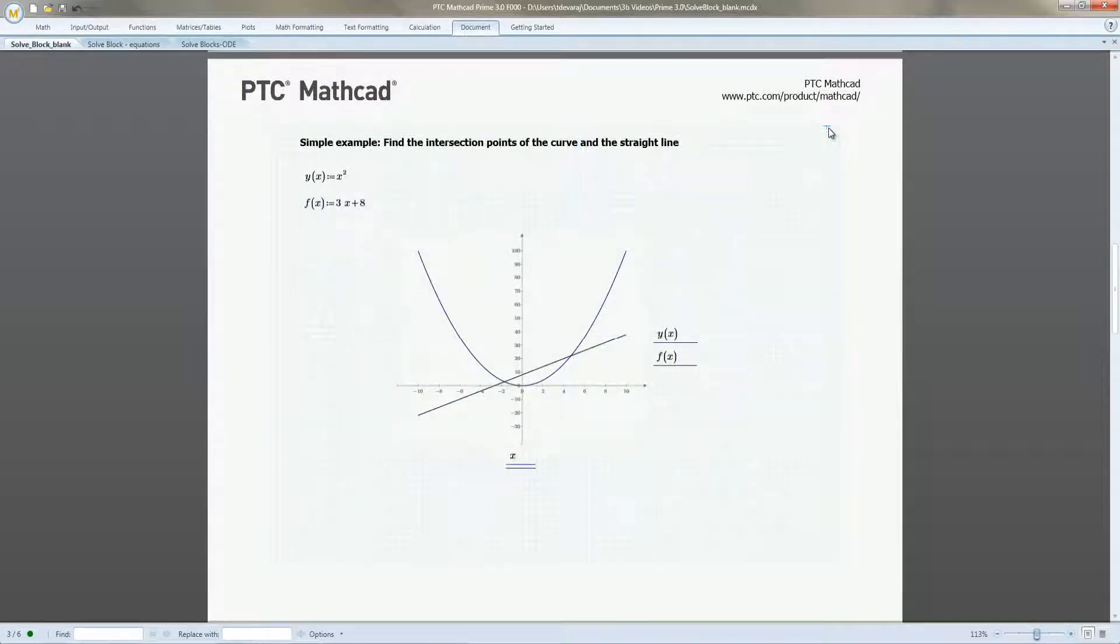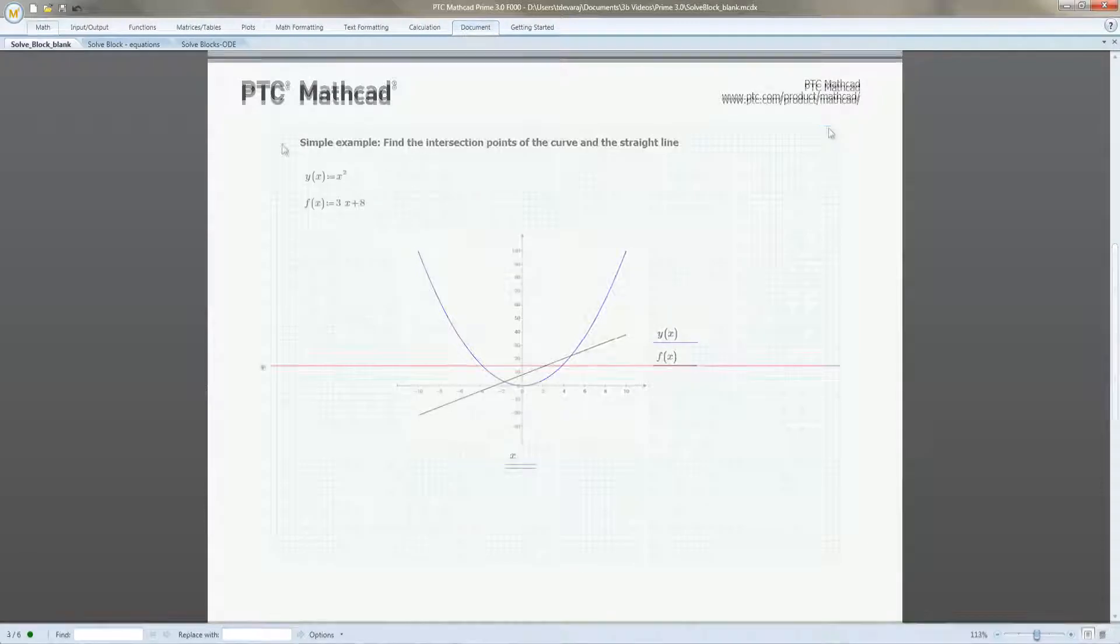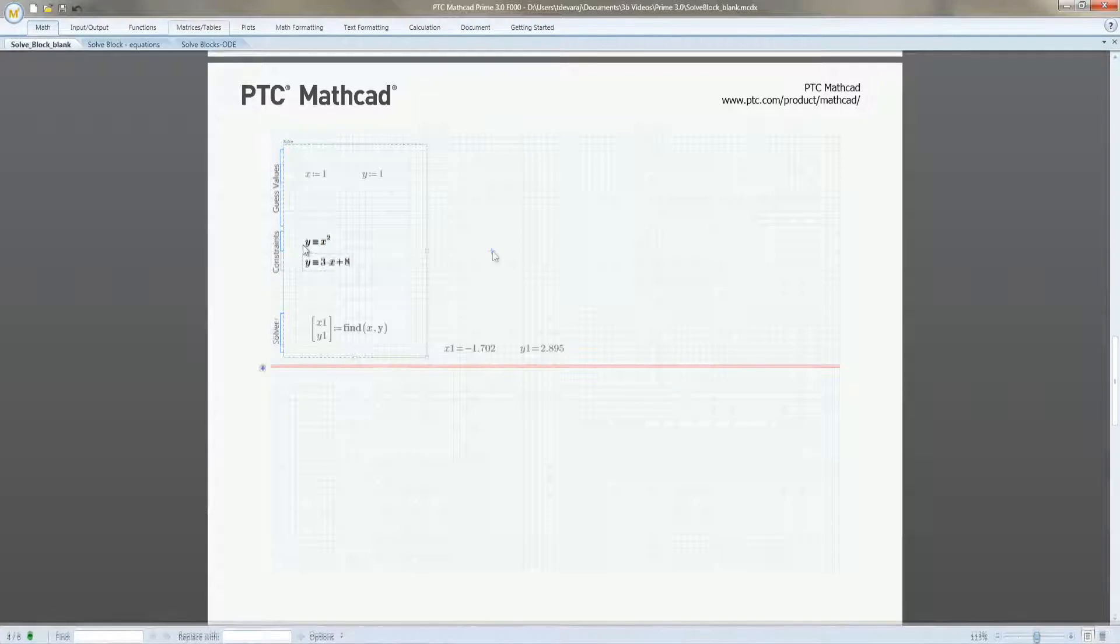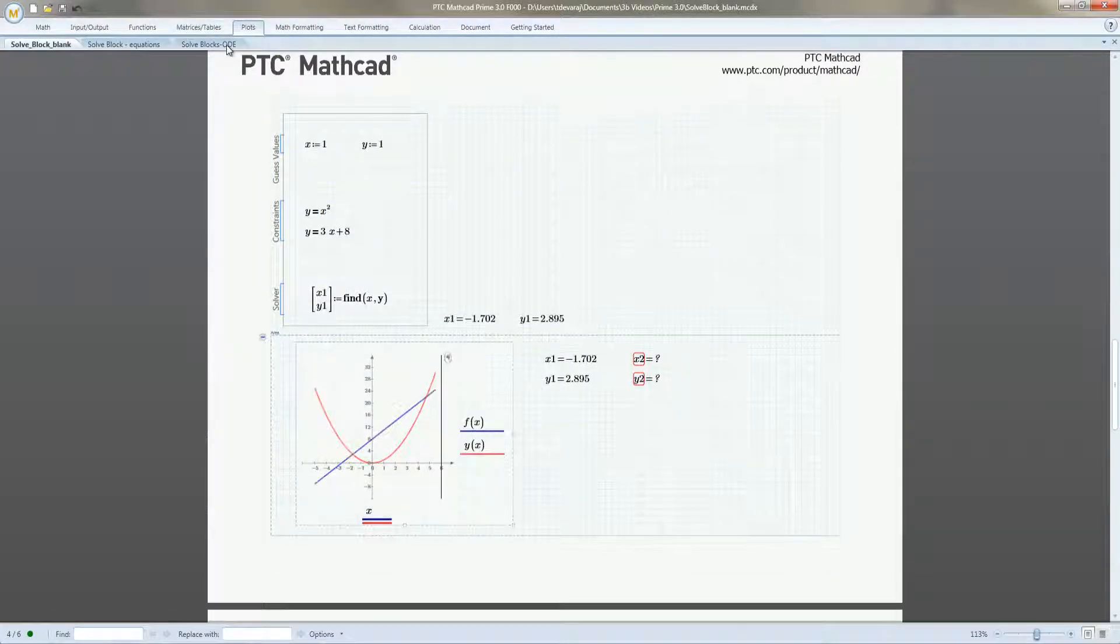To start, let's find the intersection of a parabola and a straight line. We add a solve block and enter the two equations. We plot the results from the solve block and verify the intersection with vertical and horizontal markers.